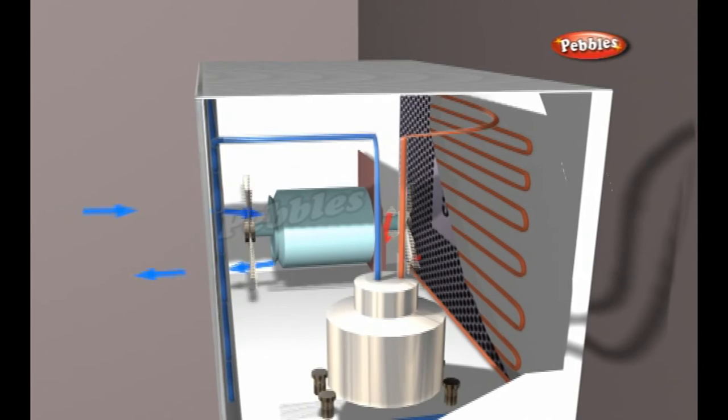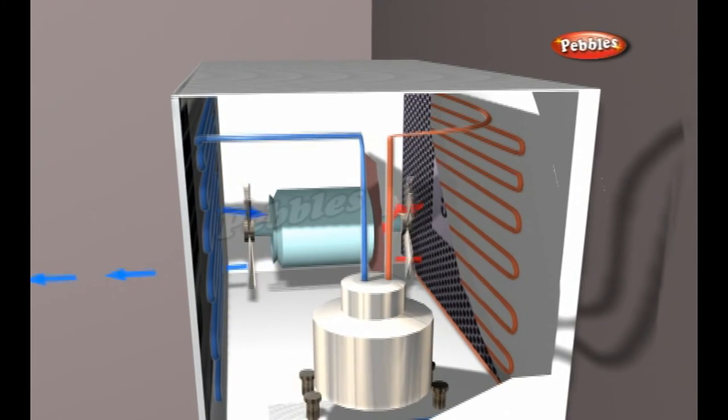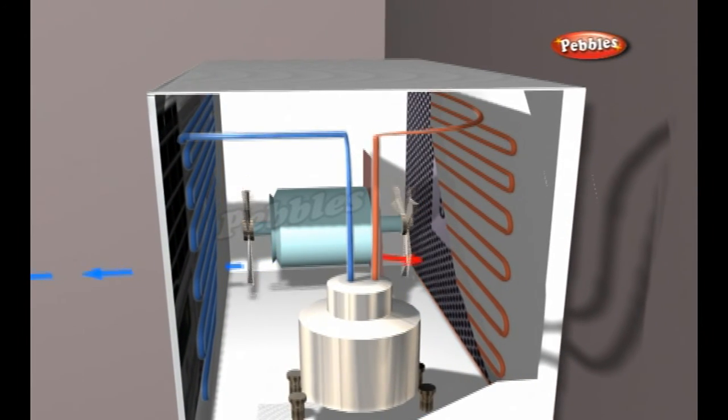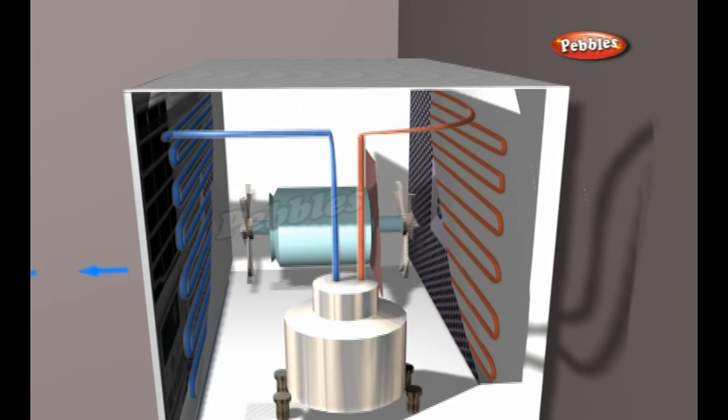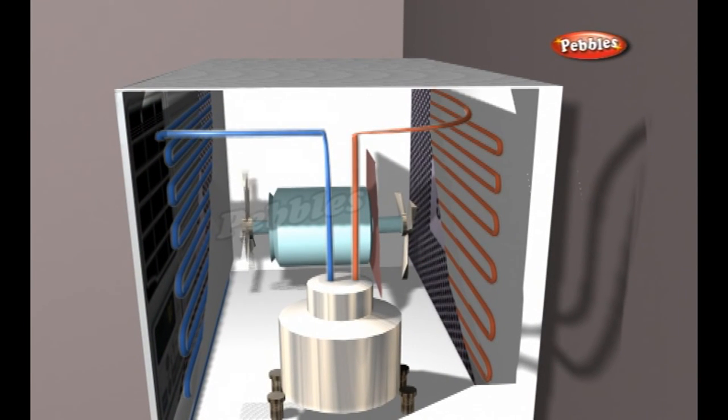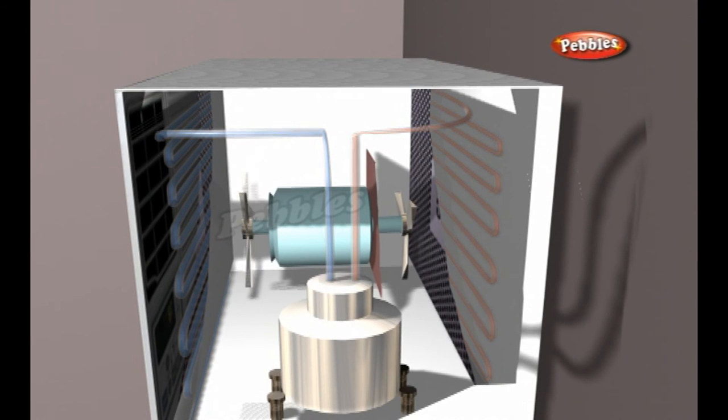Because the evaporator coils are cold, they cause moisture in the room to collect on them, much like a cup of ice water on a warm, humid day. When the amount of moisture increases, it begins to drip down off of the coils into the bottom pan of the air conditioner. The thermostat on a window air conditioner works by sensing the air temperature entering the air conditioner.